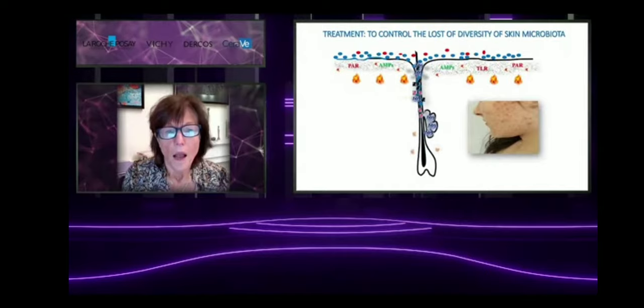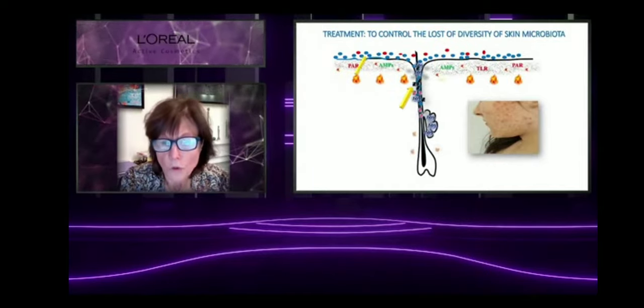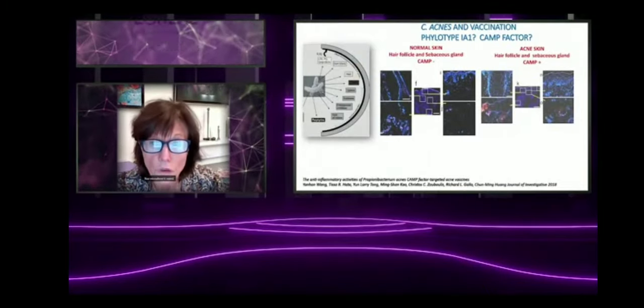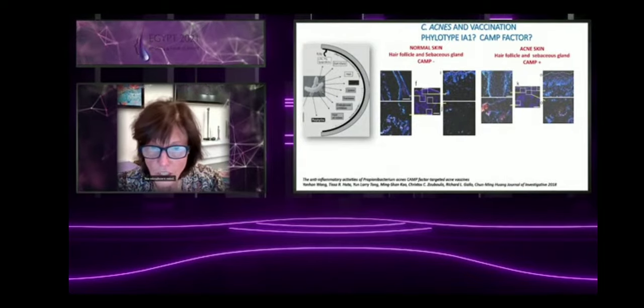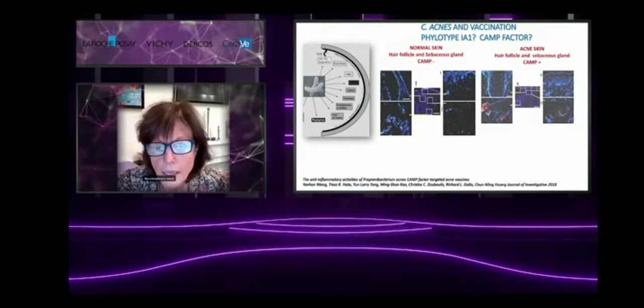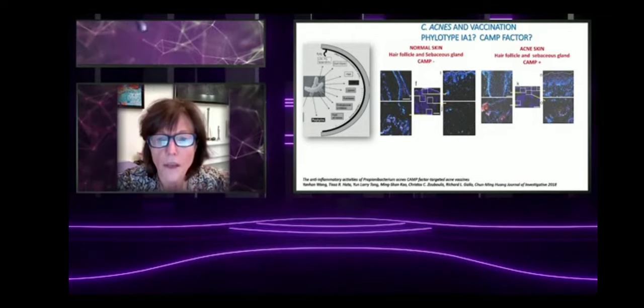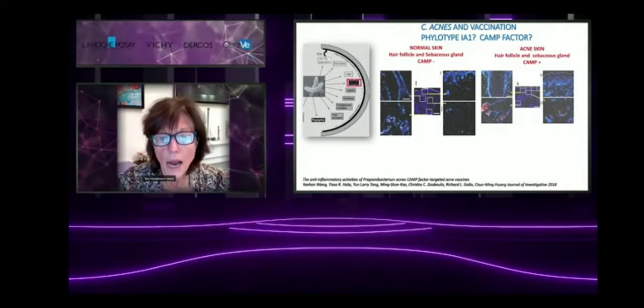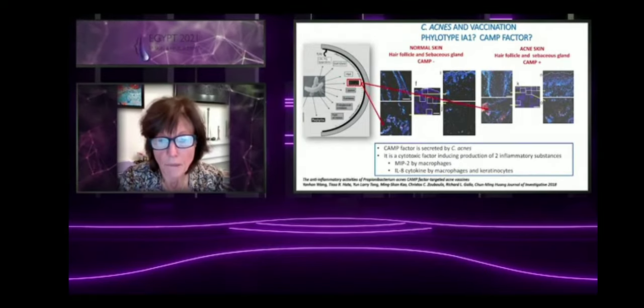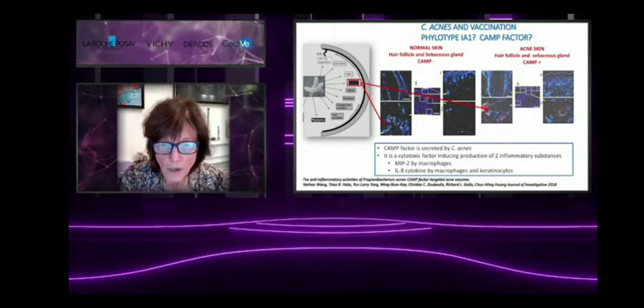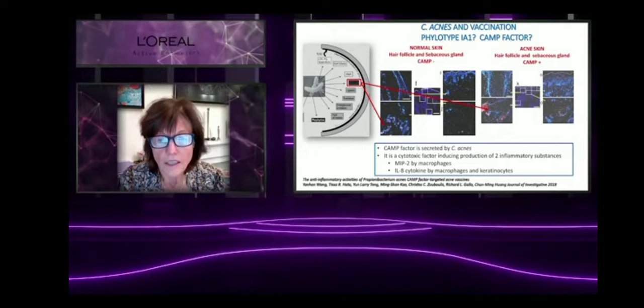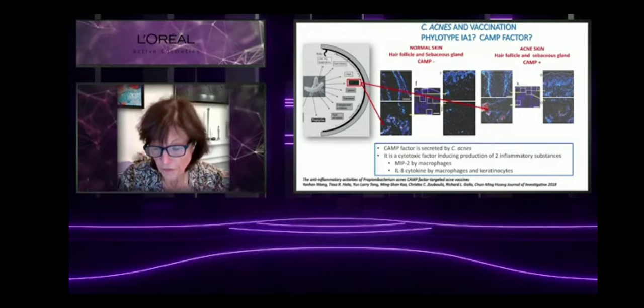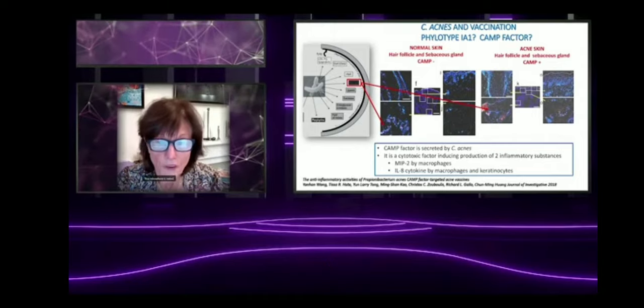Treatment, as I mentioned to you previously, is very important to control the loss of diversity of the phylotype. What do we have in the future for the treatment? First, vaccination. And concerning vaccination, one important factor secreted by Cutibacterium acnes plays a crucial role in inflammation. It's CAM factor. And we have the first study which has been performed using CAM factor in a vaccine. And this cytotoxic factor is of particular interest. And this is the first generation of vaccinations.